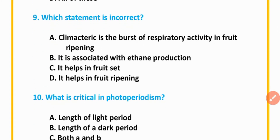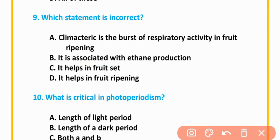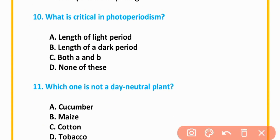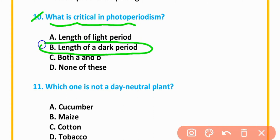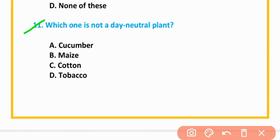MCQ number 9: Which statement is incorrect? 'It helps in fruit set' — this option is incorrect. MCQ number 10: What is critical in photoperiodism? The length of the dark period is correct — length of dark period is correct.